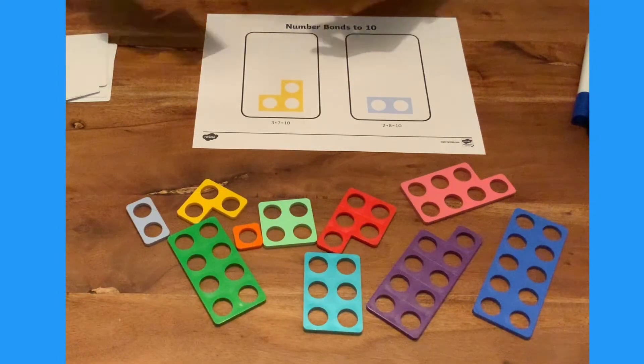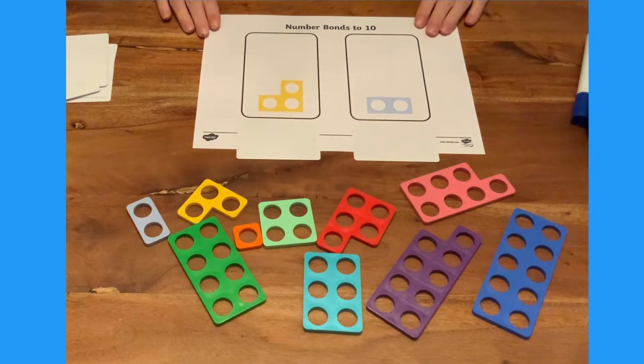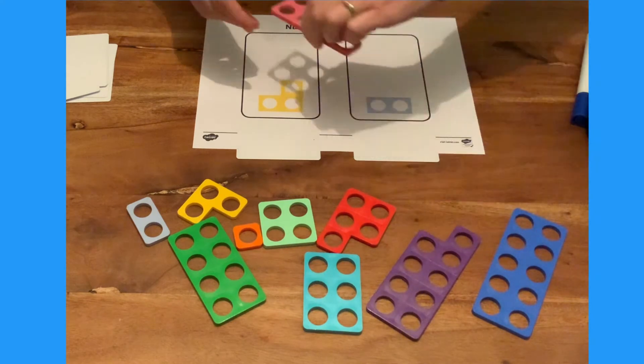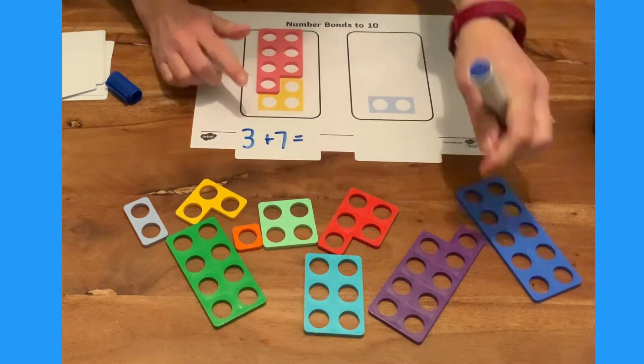These sheets have the corresponding number sentences at the bottom. You could cover these over so that children can write the number sentences themselves. A three piece and a seven piece makes ten. Three add seven equals ten.